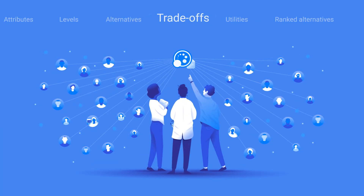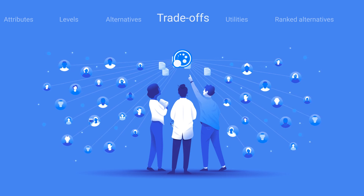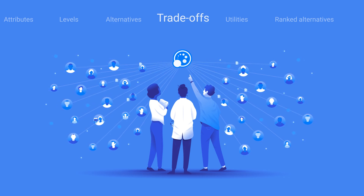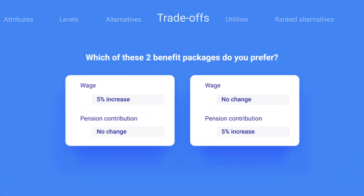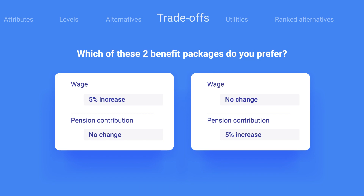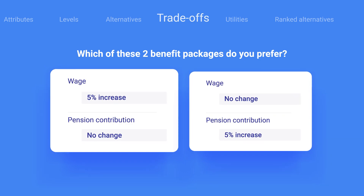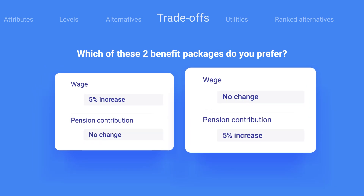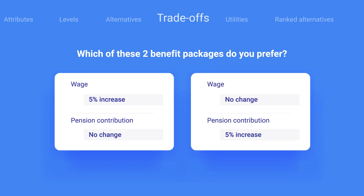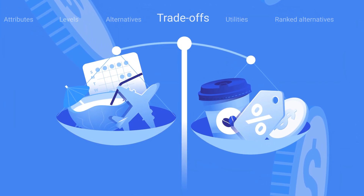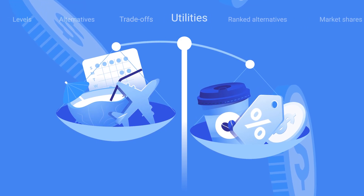To gather information about our employees' preferences regarding our attributes and their levels, we'll send out a 1,000 Minds survey. Participants will be presented with a series of questions where they have to choose between two hypothetical alternatives or concepts, and each choice involves a trade-off. The questions will be something like: Do you prefer your benefits to include a 5% wage increase but 0% pension increase? Or would you prefer to receive no wage increase but a 5% pension increase? Which of these two hypothetical alternatives do you prefer?